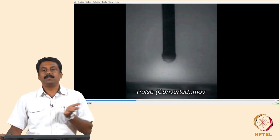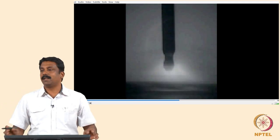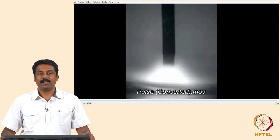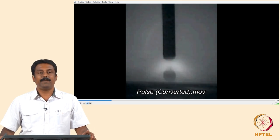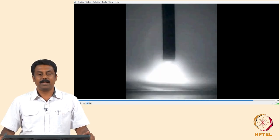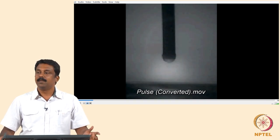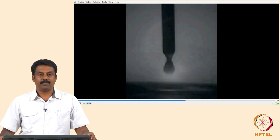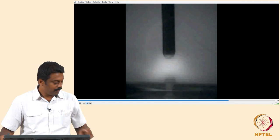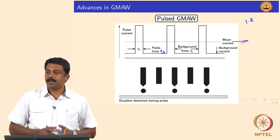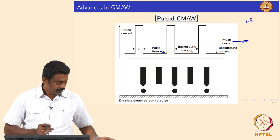We need to identify how to arrive at the pulsing parameters. We can predict the pulsing parameters for a given material and diameter. The transfer criterion is one droplet per pulse, and we transfer the droplet per pulse based on this condition.